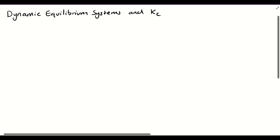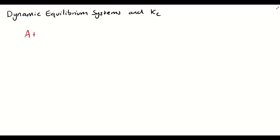In this video, we're going to take a look at what we call dynamic equilibrium systems and something called the equilibrium constant, represented by Kc. But first of all, let's review energy profile diagrams. So let's say that we have some reaction: A plus B forming C plus D.